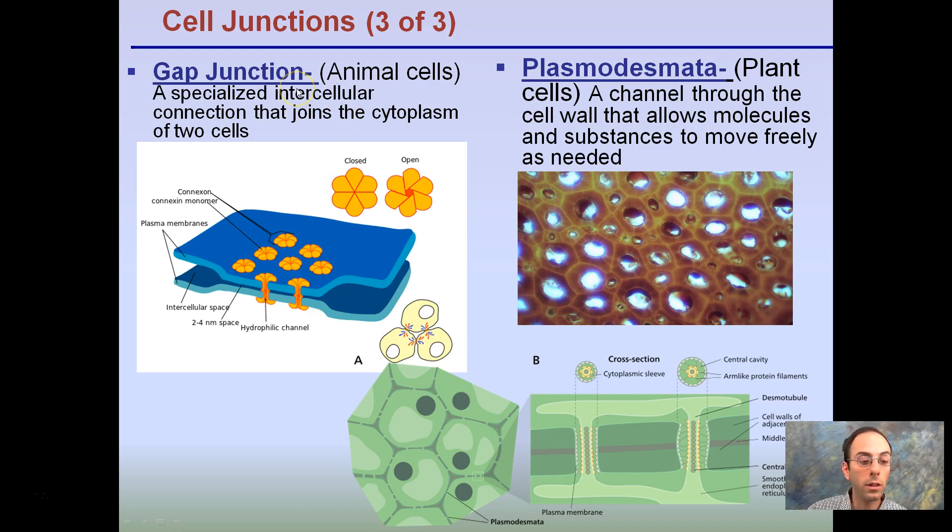Animal cells are called gap junctions. However, in plant cells they have a different name. They're called plasmadesmata. They're channels through the cell walls.